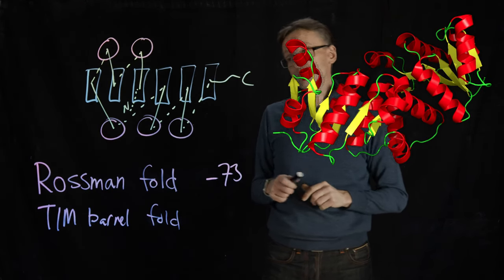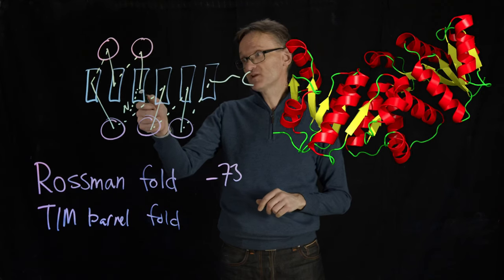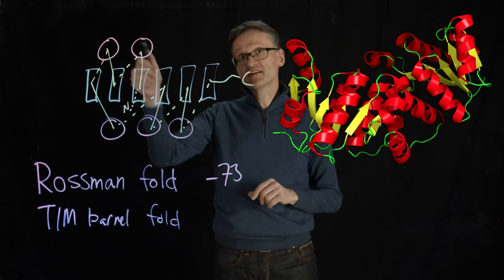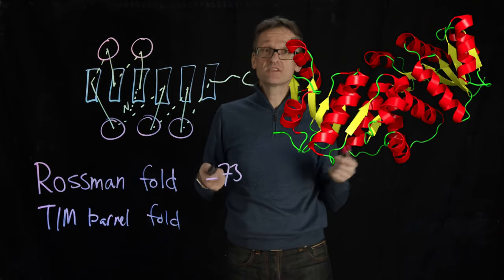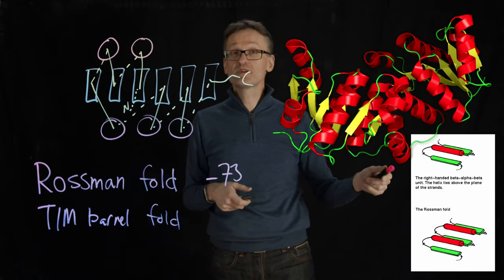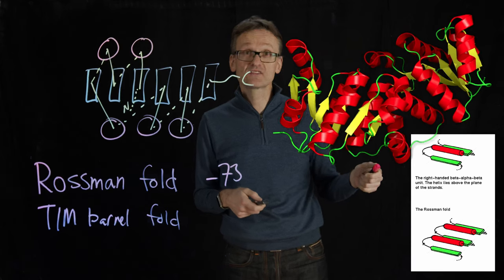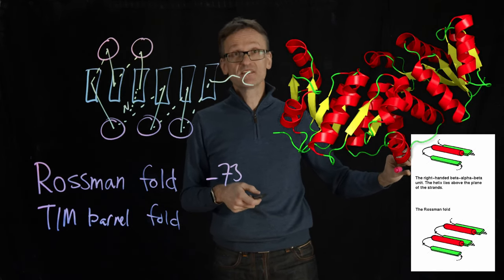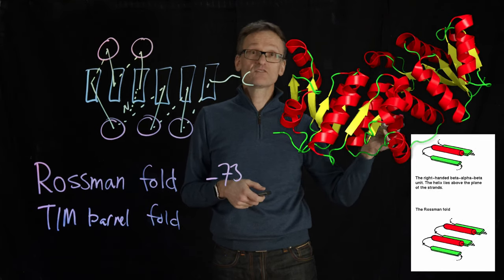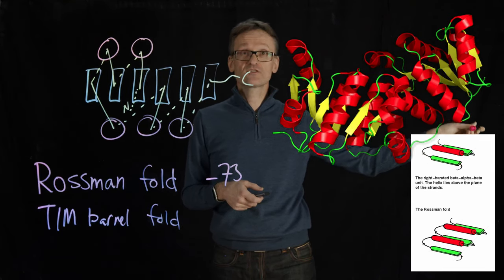In the Rossman fold, this particular alternation between beta strand and helix actually solves another problem. Remember when I told you about these right-handed crossovers being very common in beta strands? So you're having one strand, the green there, and then I need to go back to the beginning so I can start on the second strand.